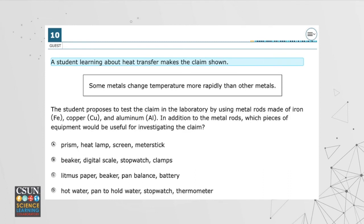Another multiple choice question worth highlighting — as we mentioned, there are a lot of questions about science and engineering practices. In this case, they're asking students: given a scenario, how would you create an experiment to test it, and what materials would you need for your experiment? This is a type of thinking students may not be as familiar with. You want to make sure they've thought through these kinds of issues and know what some of these lab tools are — we haven't done a lot of in-person labs recently, so students might not be as familiar with some of these tools.